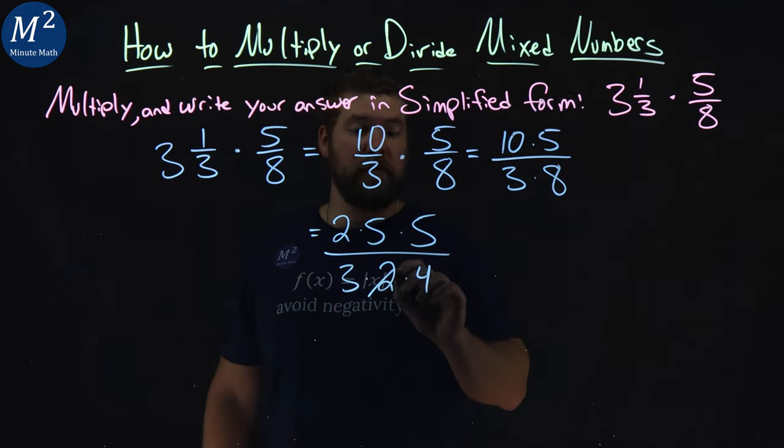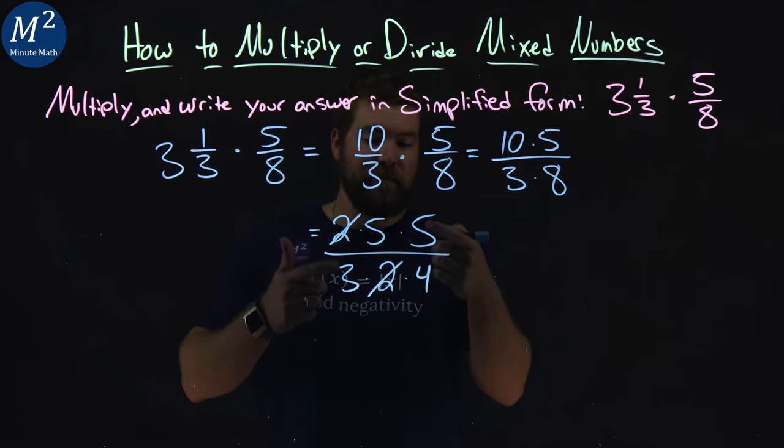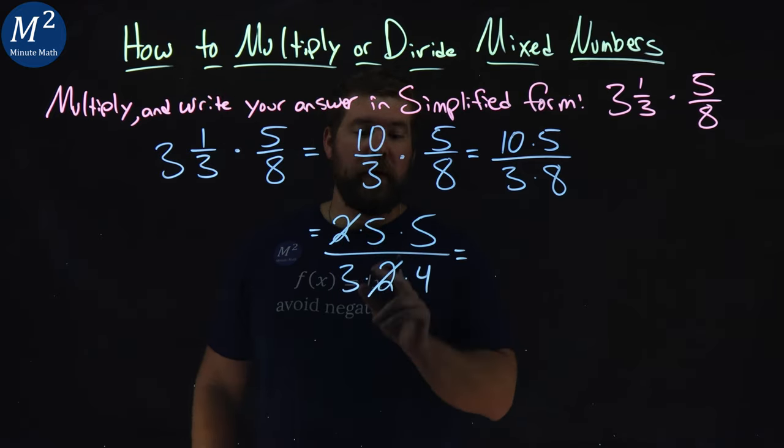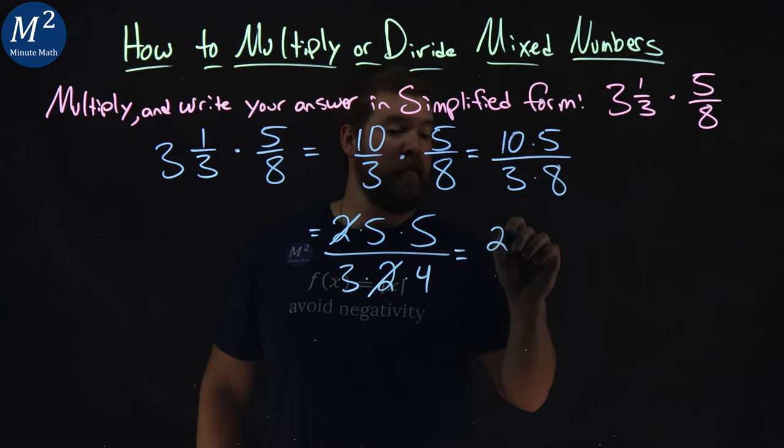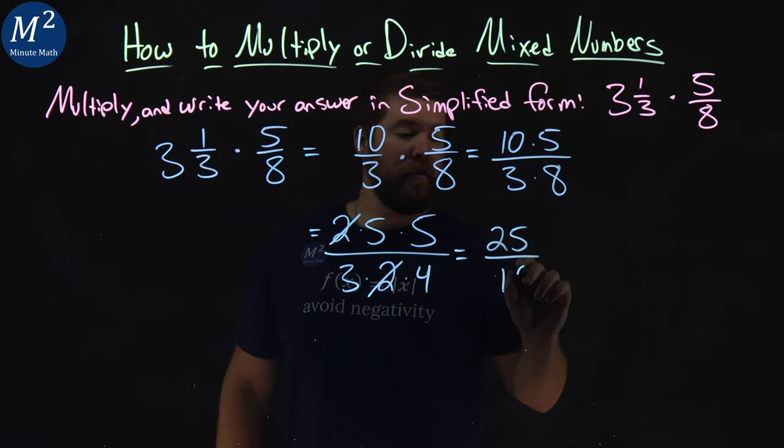Hopefully you can see the twos cancel. Anything else that can break down here? I don't see any. Multiply it out. Five times five now is twenty-five in the numerator, and three times four is twelve in the denominator.